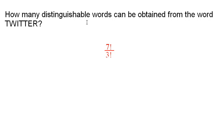How many distinguishable words can be obtained from the word Twitter? Well, there are seven factorial ways of rearranging these letters, but you see a lot of them cannot be distinguished.